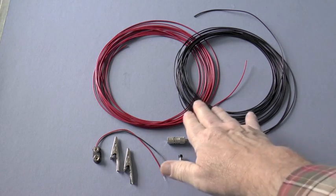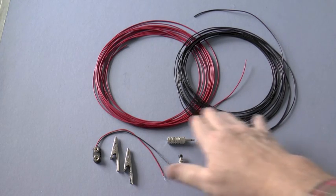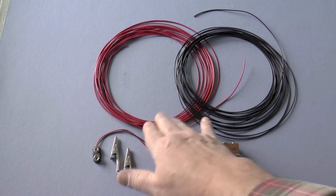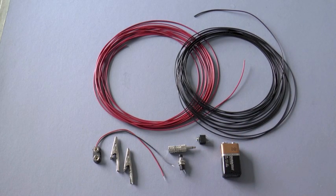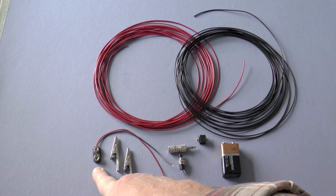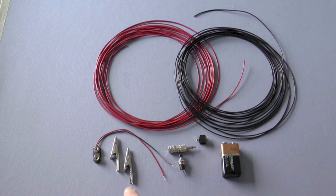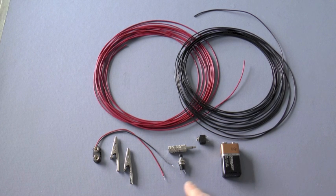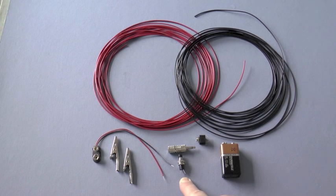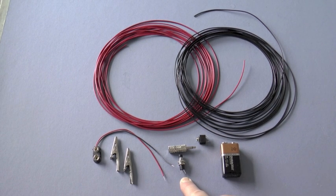And to make this engine igniter, what we have are two pieces of hookup wire. This is 22-gauge stranded wire, one red, one black. They're about 20 feet long. We have a 9-volt battery snap cap, two alligator clips, and a push-button switch. This is a momentary switch, so the contacts are only closed when you push on the button.